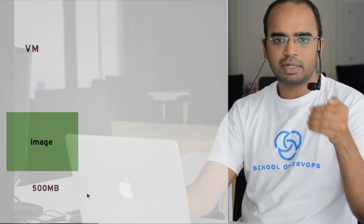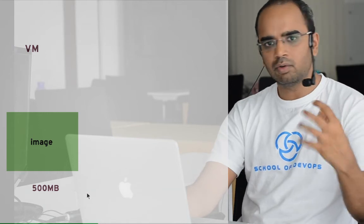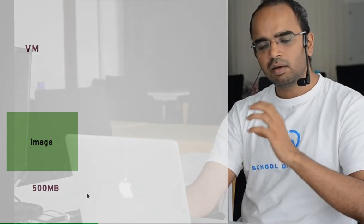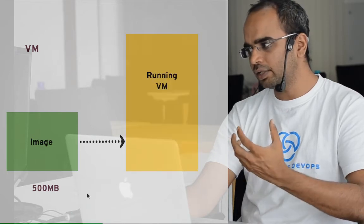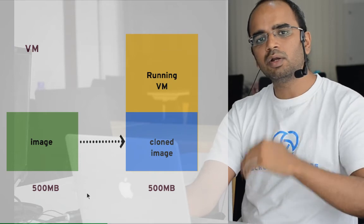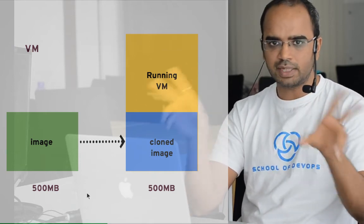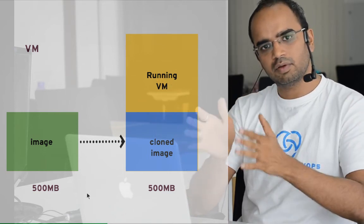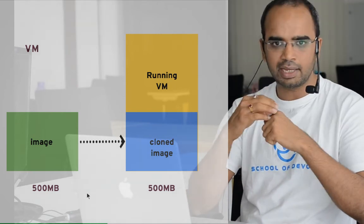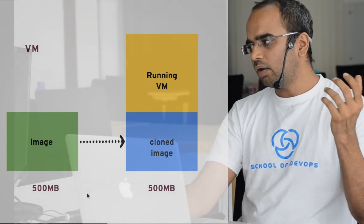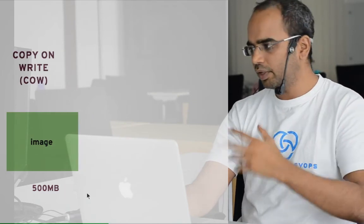There's another interesting concept: copy-on-write. With a VM, if you have a template image of about 500 MB — an AMI or golden image — when you create an instance from it, the complete image gets copied over, creating a replica. The running instance has a cloned version of the original image, so it takes up twice the space. Also, when you launch a VM it takes longer because it's actually cloning that disk, which adds to the boot time.